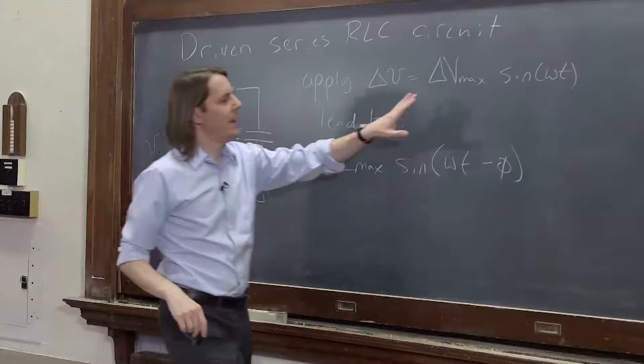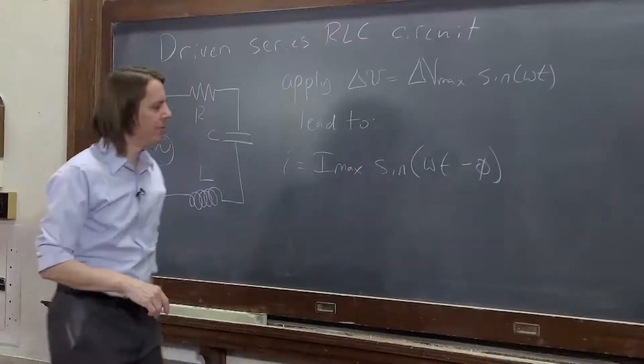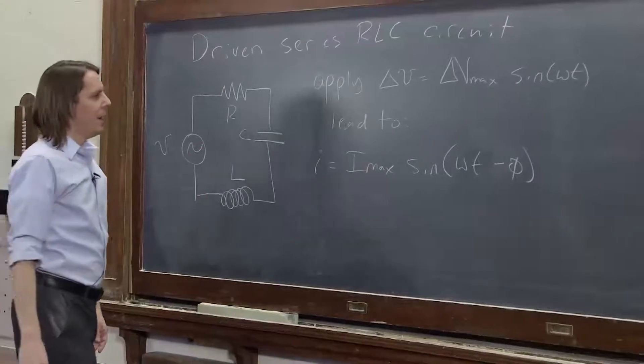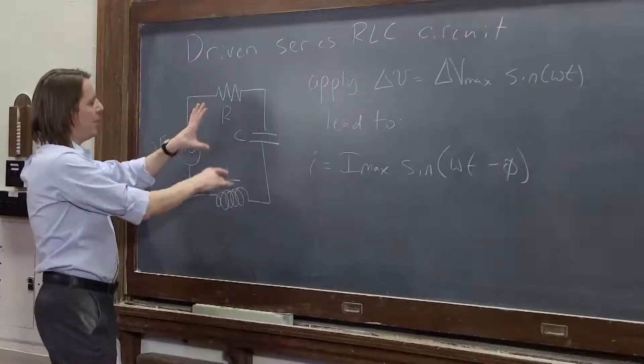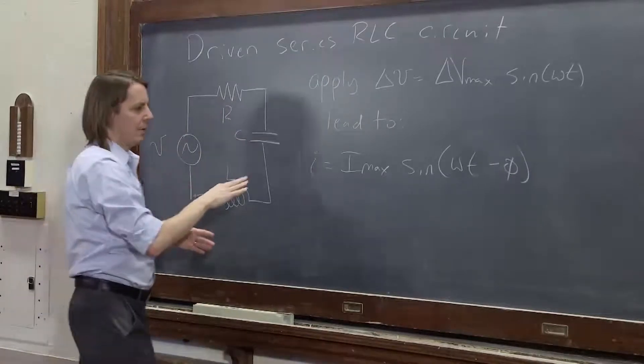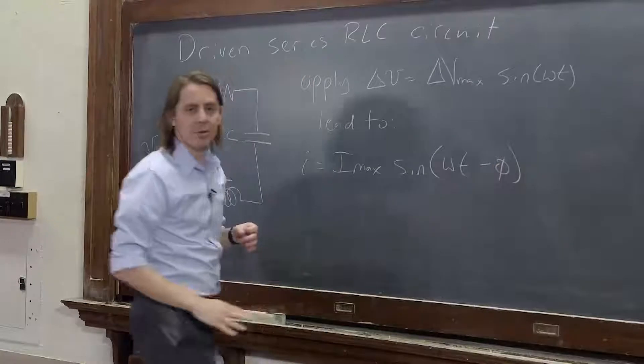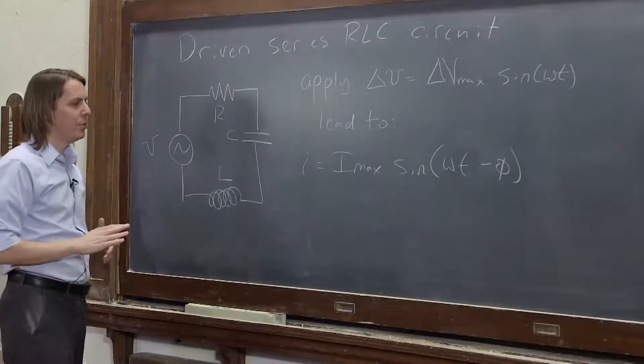So if you drive it at omega, it will eventually oscillate at omega. That's part of the process of finding the answer. And there will be, you know, we talked about in each one of the elements, it's in phase or it leads or it lags, the current and the voltage. Here, you're going to end up with a phase difference of some amount. It won't necessarily be zero plus or minus pi over 2. It'll just be some amount.